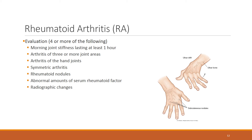If four of these criteria are present, it is diagnostically relevant to diagnose rheumatoid arthritis. Rheumatoid factor is the most specific finding — more specific than joint involvement in three or more areas, which is less specific on its own.